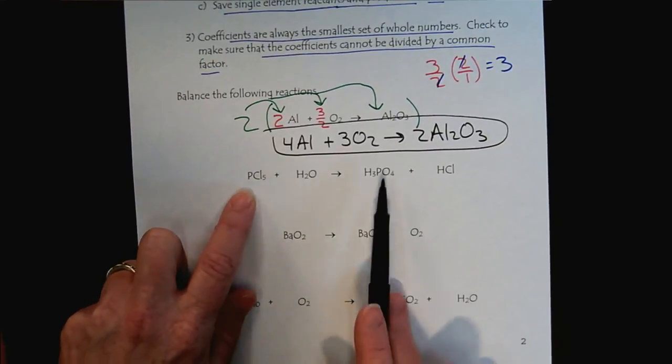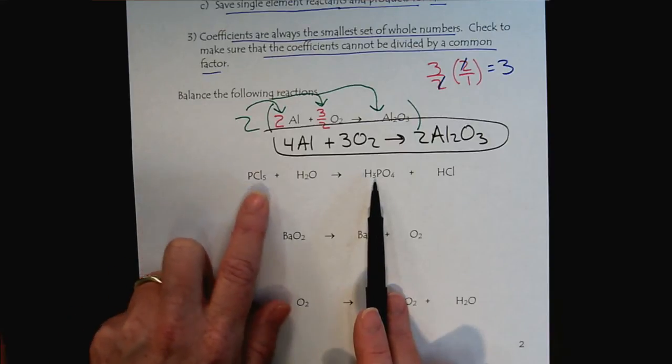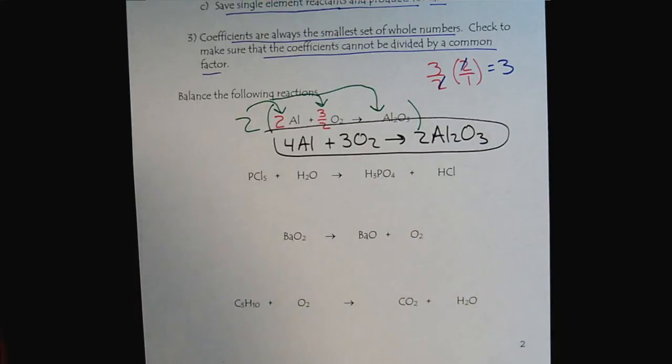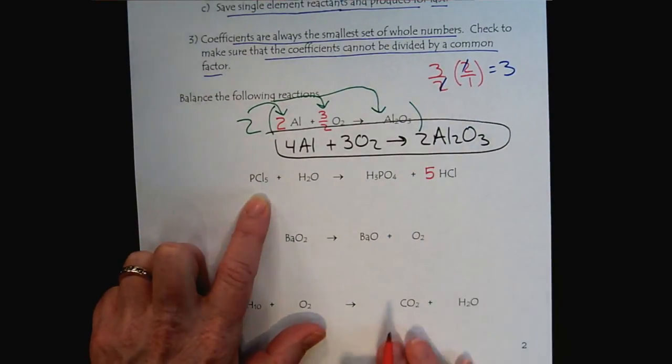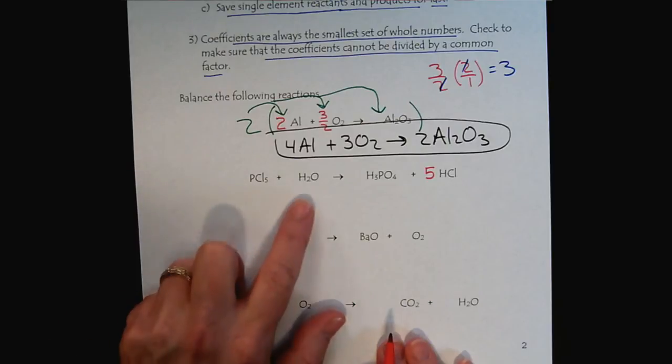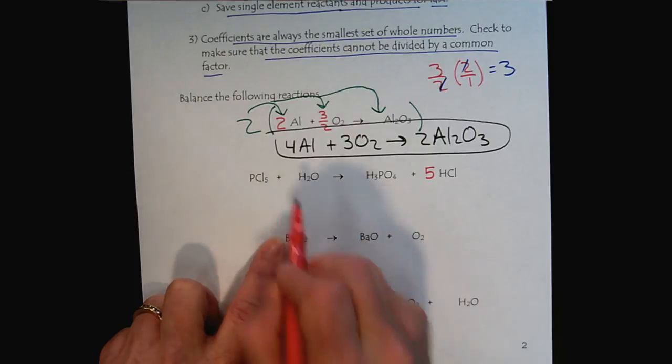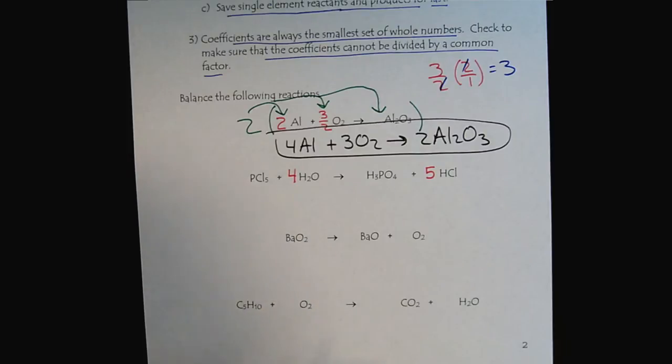The phosphoruses are both ones, so we'll wait there. We see five chlorines and one chlorine, so that would let us know we should put a five here. And then the oxygens, we have one oxygen and we have four oxygens, so we'll put a four here. Now the moment of truth.